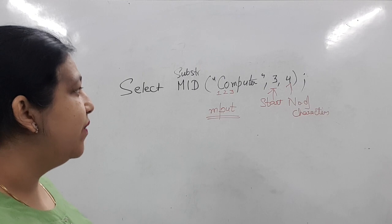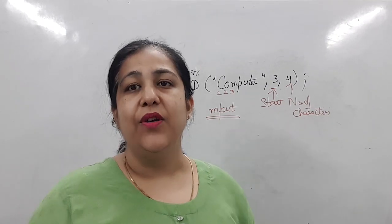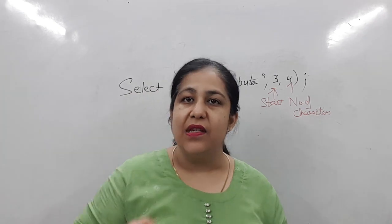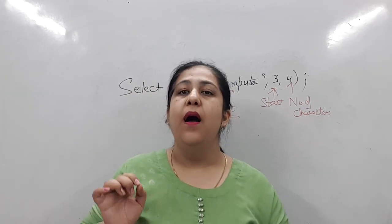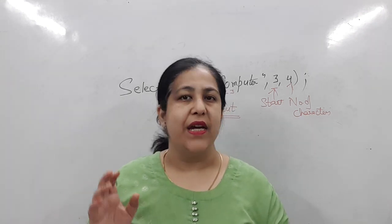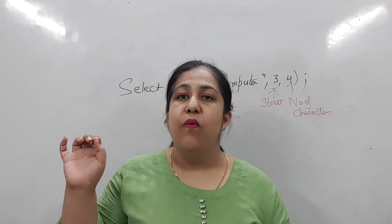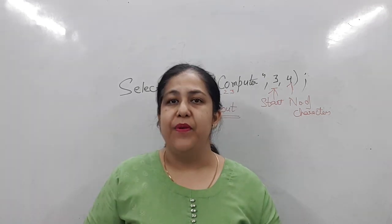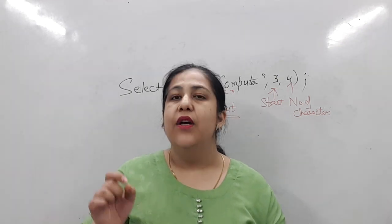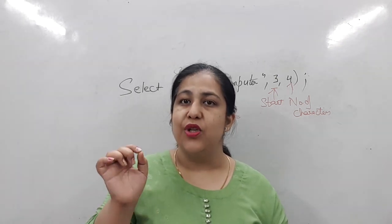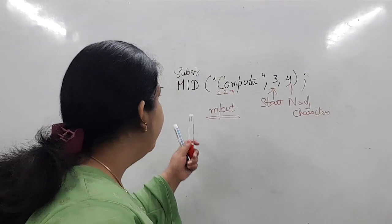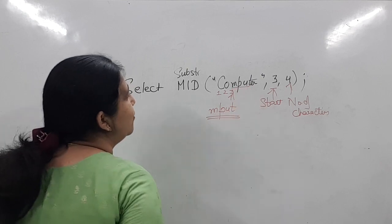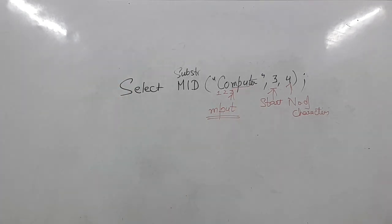Starting from position 3, four characters — that gives MPUT. Where confusion arises is because Python also has strings, and in Python the first letter is at position 0. Please keep this in mind. In Python or any programming language like Java, C, or C++, positions start from 0. But SQL is a query language — here in strings, positions start from 1. So your first character is at position 1, not 0.